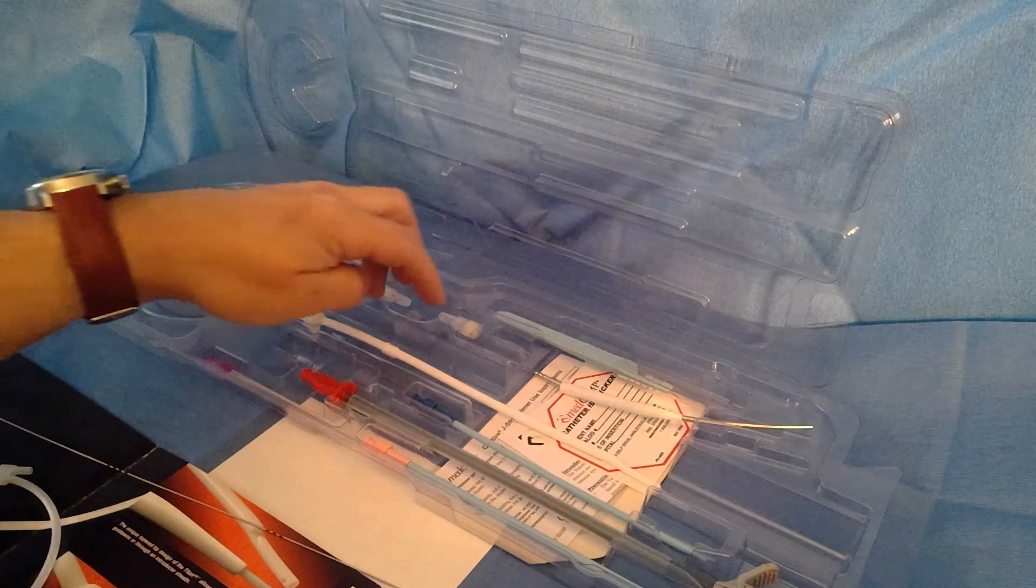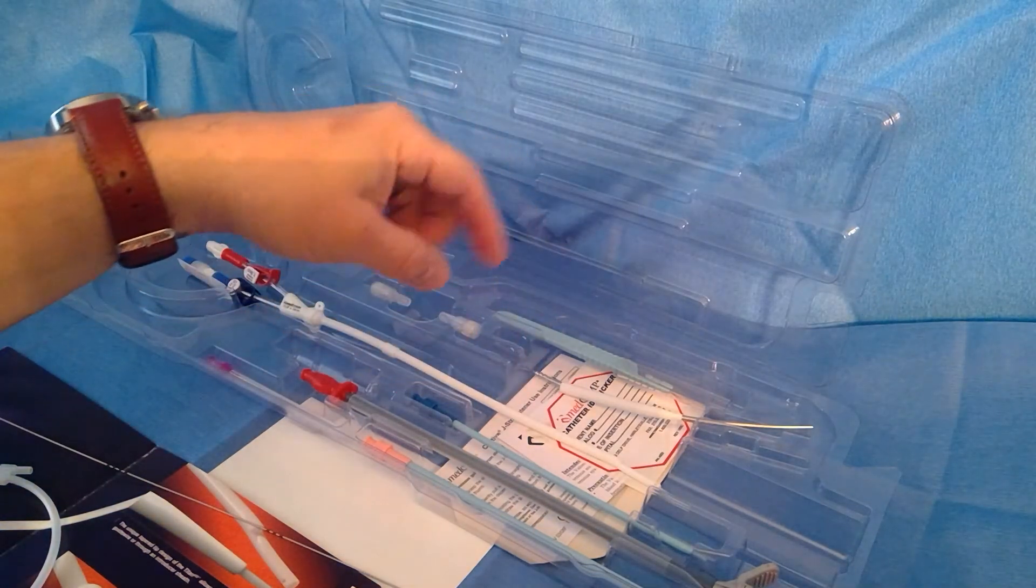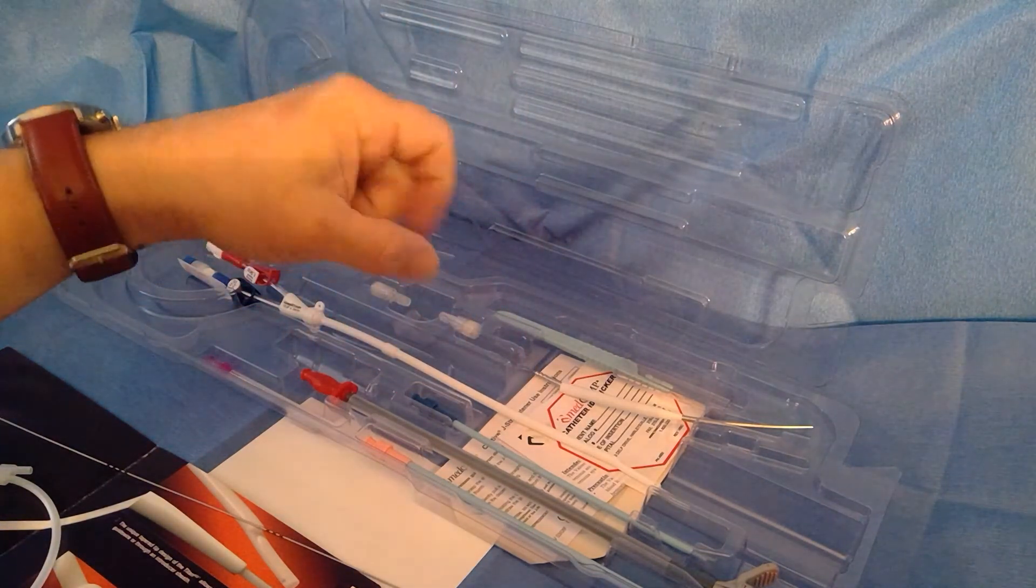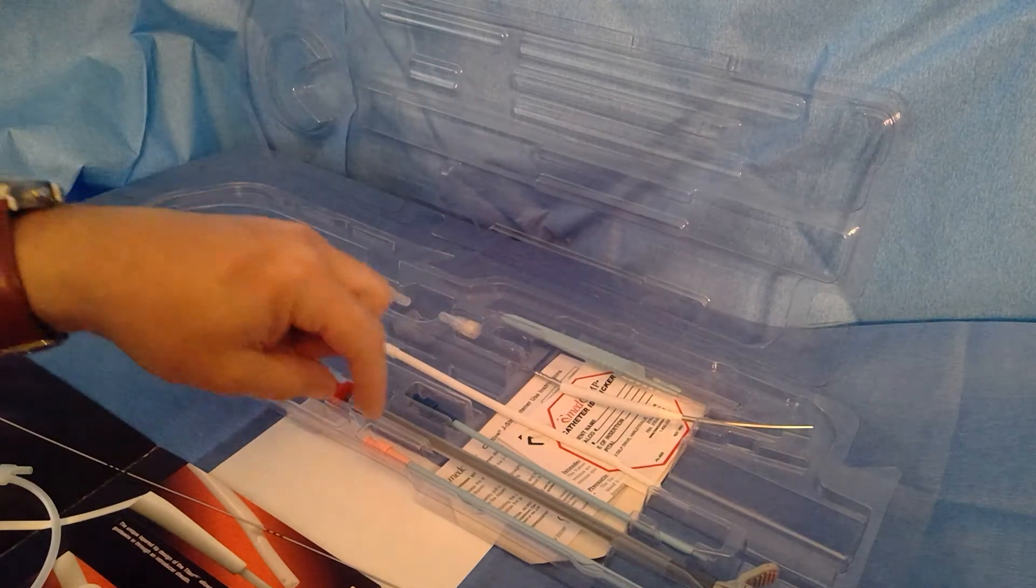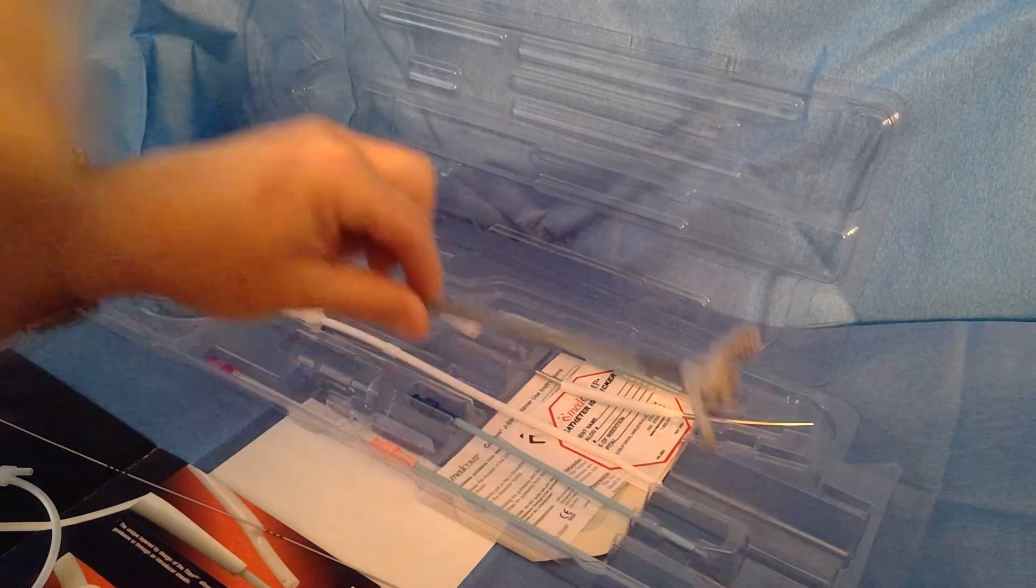It comes with your catheter, caps, tegaderm, your IFU and other information labels, scalpel, dilators, and then your air guard sheath.